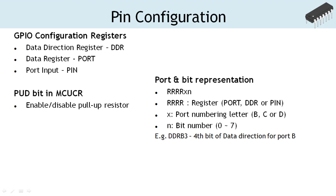Before discussing further, let us quickly understand the representation used to identify the port registers and individual pins. The same representation is used in the microcontroller reference manual and the register map header file. The first three or four letters are used to identify either of the control registers. X identifies the port numbering letter — either B, C, or D — and the letter N represents the bit from 0 through 7. For example, DDRB3 represents the fourth bit of the data direction register of port B.